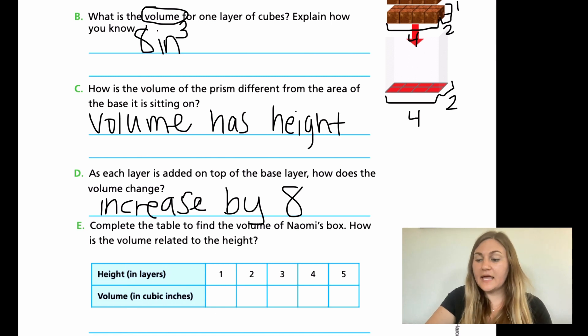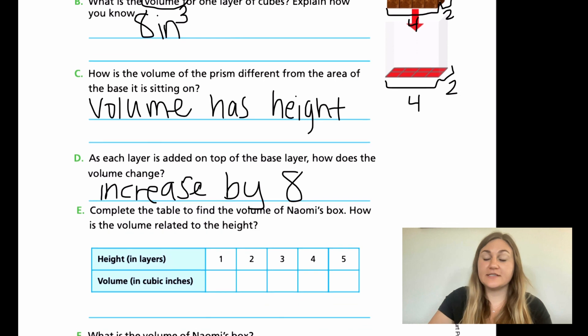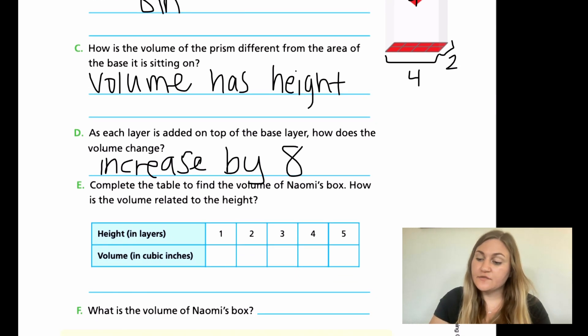Now we're going to look ahead to E and F as our last questions for this lesson. For E, it says complete the table to find the volume of Naomi's box. How is the volume related to the height? It gives you the height in layers: layer 1, layer 2, layer 3, layer 4, layer 5. You need to find what the volume is at each layer. And then for F, what is the volume of Naomi's box? When it's completely full, what is the total volume at the very end? Go ahead and solve those two. Go ahead and click pause here.